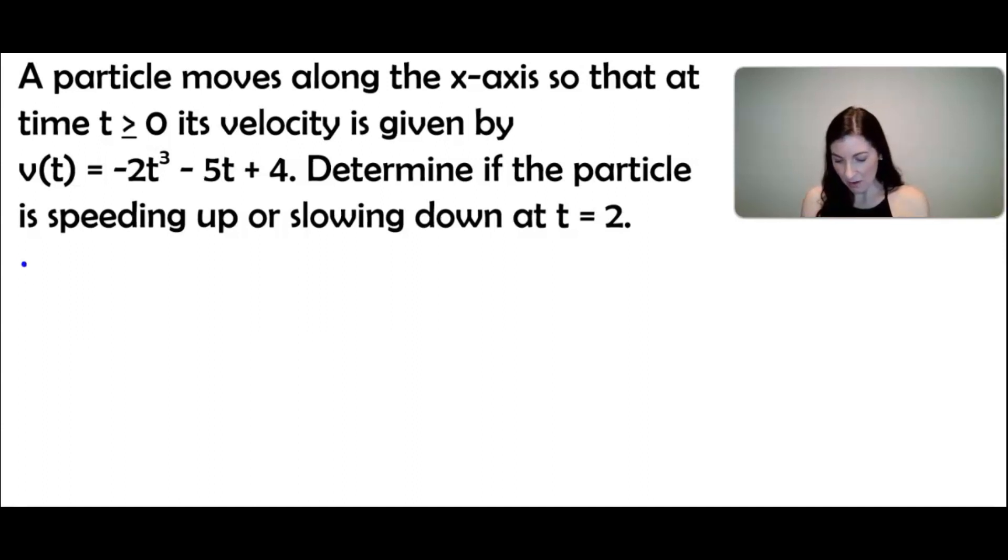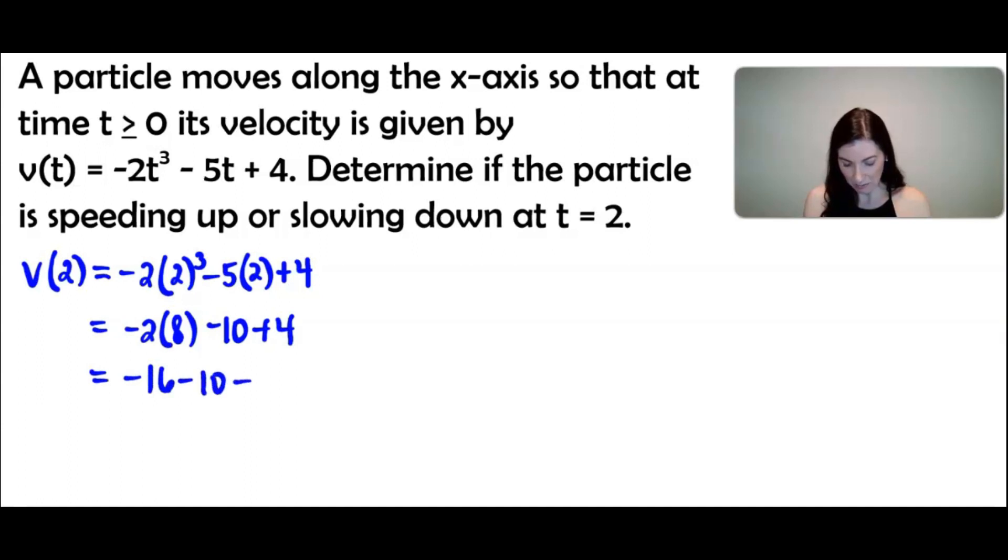The first thing we need to find is v of 2. This will tell us what is the sign of velocity at a time of 2. That means we simply need to replace the t with a 2 and do the arithmetic to see what it's equal to. This will be negative 2 times 8 minus 10 plus 4. So we've got negative 16 minus 10 plus 4. I can already see that this number will be negative, which is really what you care about, but if we do want to get the exact value, negative 26 plus 4 would give us negative 22. So I'm going to conclude that the velocity at a time value of 2 is negative, is less than 0.